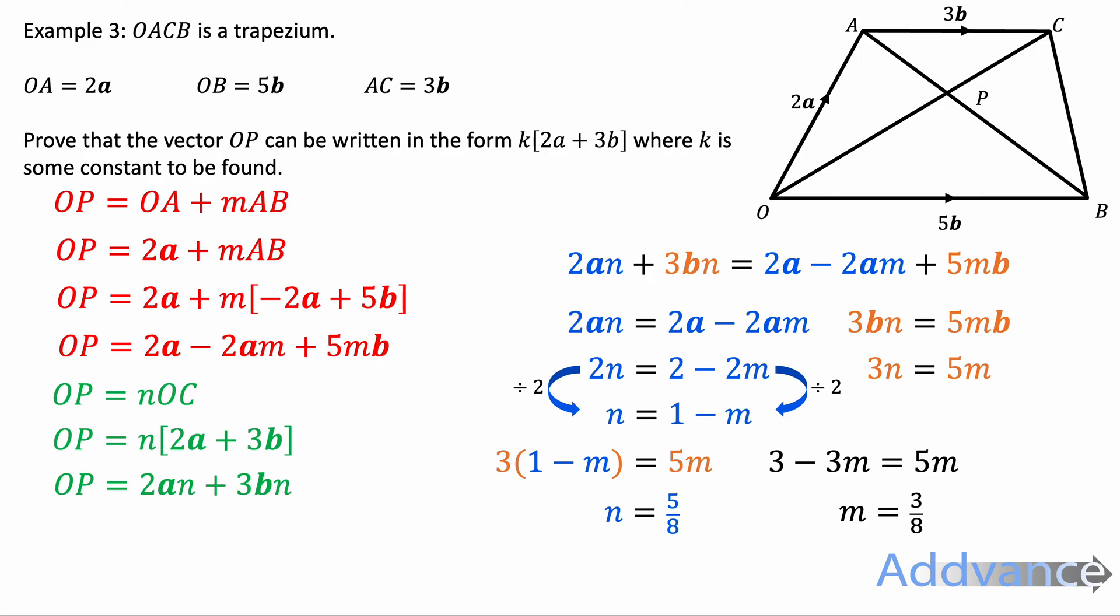We have almost done. Now we've got the expression here using n. So we've got OP is n times 2a plus 3b. Substitute that into that expression. And we now have our vector in the form k times 2a plus 3b. Where k is 5 eighths. And we have shown, as required in the question, that OP is 5 eighths times 2a plus 3b. And we have done.